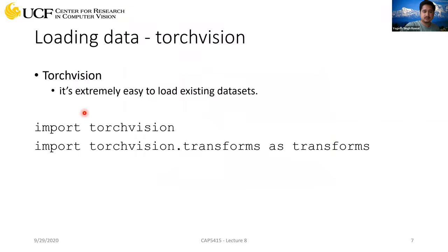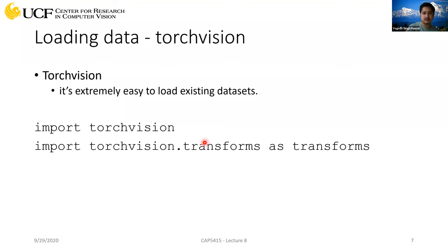Coming back to data loaders. We have a nice library called torchvision which is used for computer vision. In it we have a lot of useful functions for data pre-processing or loading your data into GPUs. One such API is transforms — it allows you to do lots of data pre-processing like reshaping images, cropping images, or doing data normalization on the pixel values.